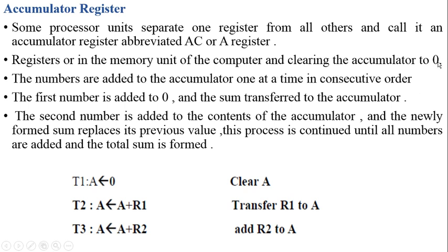The numbers are added to an accumulator one at a time in consecutive order. The first number is added to 0 and the sum is transferred back to the accumulator. These accumulator registers are usually used for accumulating the result of addition.